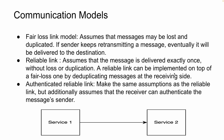The second model is a reliable link. In this model, a message is delivered exactly once without any loss and duplication. A reliable link can be implemented on top of the fair loss model by deduplicating messages at the receiving side. Service one sends the message only one time, and there will be an adapter ensuring that the message is always recorded, even if service two is down.